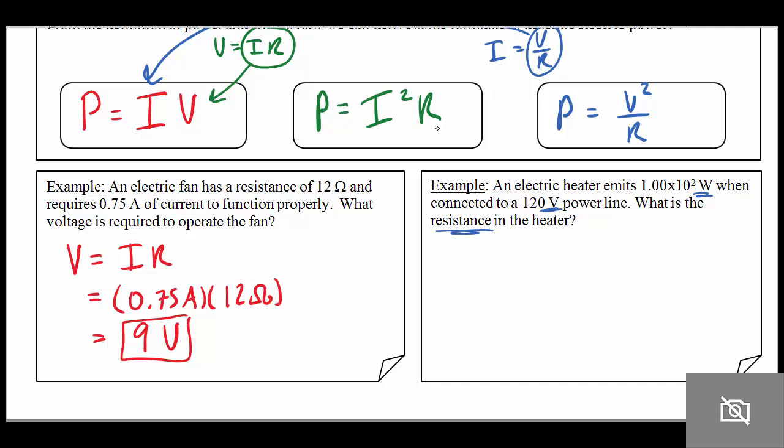Looking at my three choices of my formulas, I'm going to choose this third one right here, which says power is equal to voltage squared divided by resistance. And solving for resistance, I get this is equal to voltage squared divided by power, which is equal to 120 volts squared divided by 1 times 10 to the 2, or 100, which gives me a total answer of 144. And the units for resistance, again, are ohms.